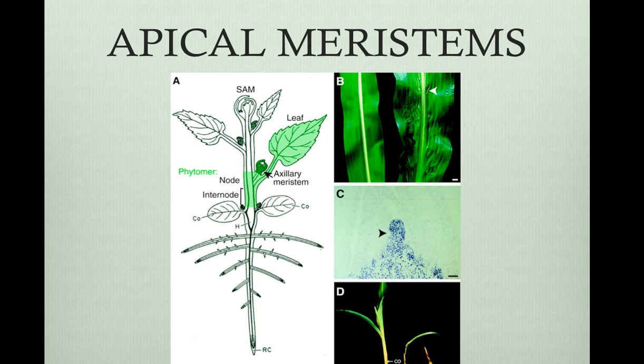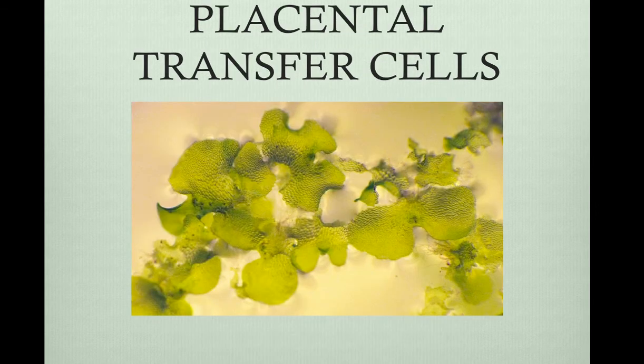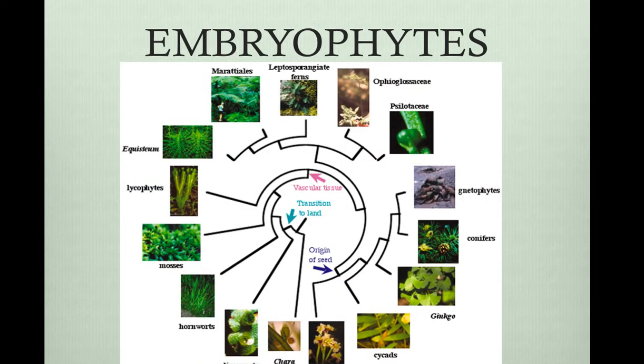A second characteristic of land plants is that they have placental transfer cells. Plant cells that enhance the transfer of nutrients from parent to embryo are considered placental transfer cells. This is like a mammal mother giving nutrients to the fetus via the placenta. Embryophytes is a term used for land plants, recognizing that land plants share the common derived trait of multicellular dependent embryos.